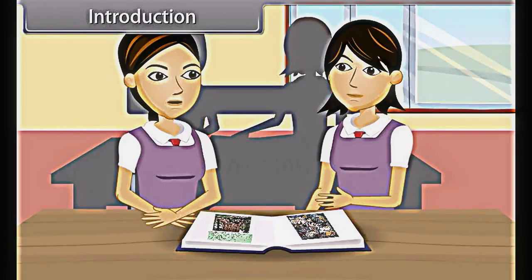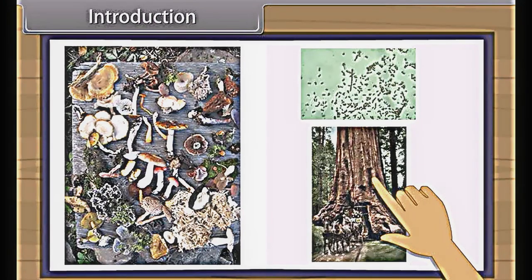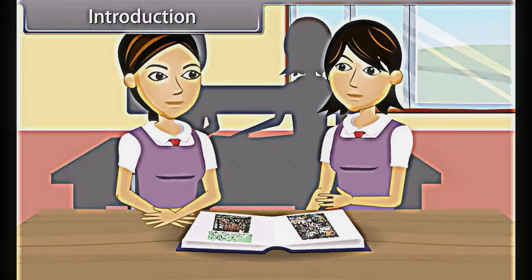On one hand, we have bacteria which are microscopic, and on the other hand, we have the blue whale, about 30 meters, or redwood trees — sequoia of California — about 100 meters in height. Likewise, insects have a lifespan of few days while trees, especially pine trees, live for 1,000 years.